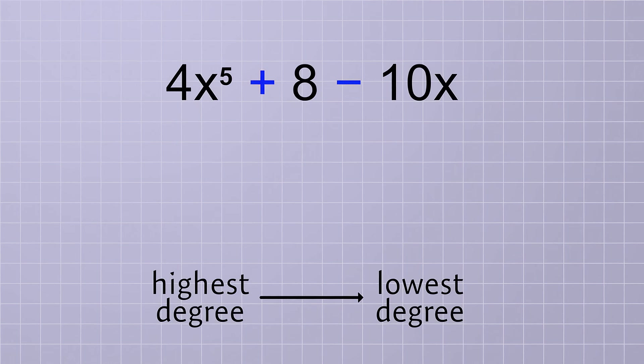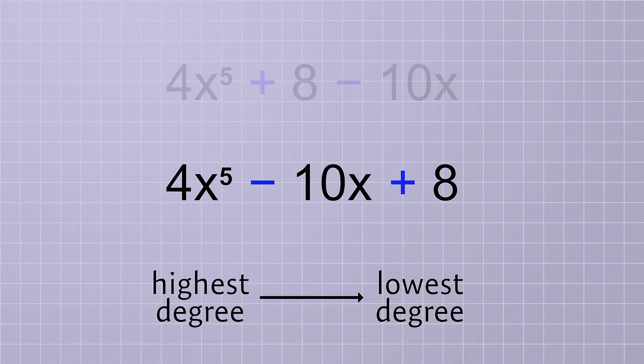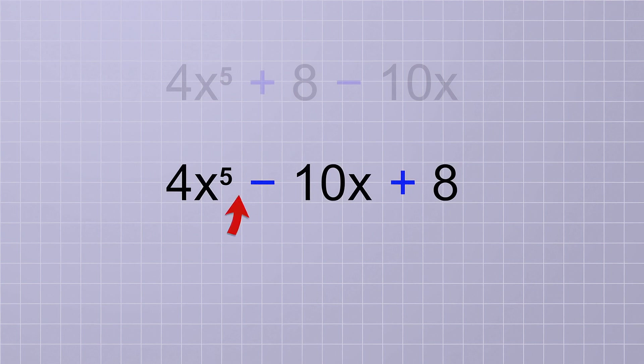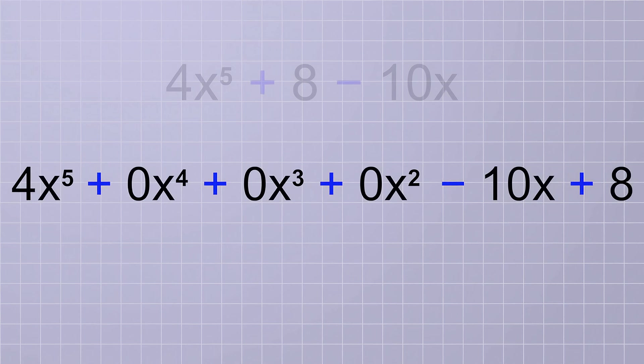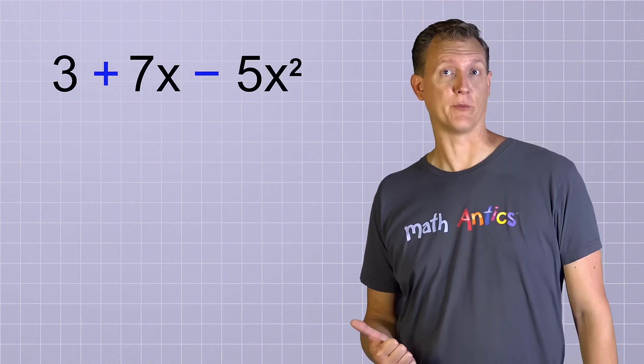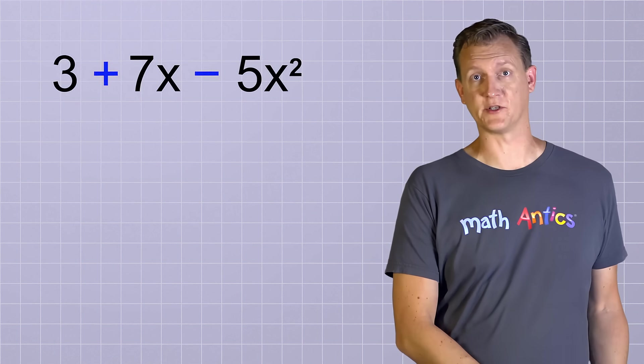So, the 4x to the 5th should come first, and then the minus 10x, and finally the plus 8. By the way, it's totally fine for a polynomial to have missing terms like that. And it's sometimes helpful to think of those missing terms as just having coefficients that are all zeros. If the coefficient of a term is zero, then the whole term has a value of zero. So it wouldn't affect the polynomial at all. And speaking of coefficients, what if we need to rearrange this polynomial so that its terms are in order from highest degree to lowest degree?